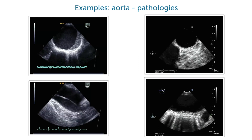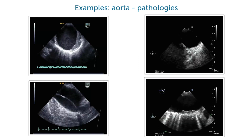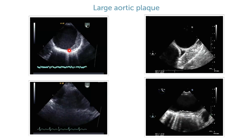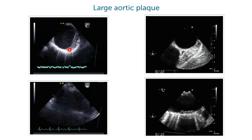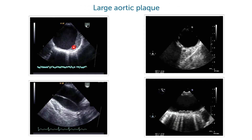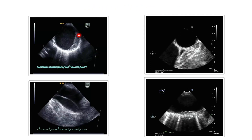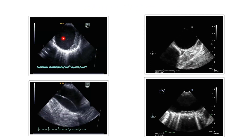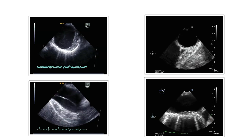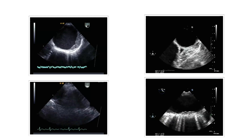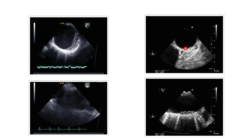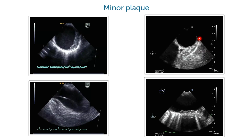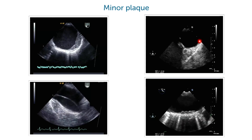Here are some examples of what you can find in the aorta: a huge plaque in the descending aorta, fibrous plaque, and if you look closely you can see a little bit of spontaneous contrast. A patient who has a rather normal aortic wall, maybe a little bit of atheromatosis here.